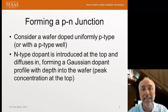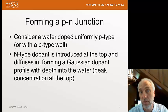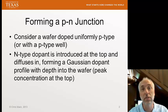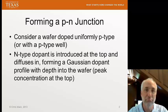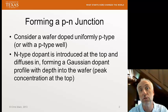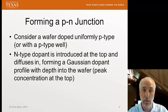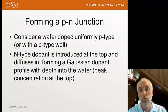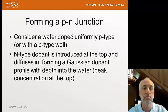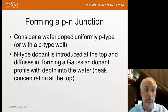We'll take an N-type dopant — a donor — and introduce it at the top of the wafer and let it diffuse in. We'll assume we know how to do that, and we'll let it diffuse in such that the concentration profile will look like a Gaussian. The peak concentration will be right at the top of the wafer, and the concentration will decrease as a Gaussian function as a function of depth into the wafer.